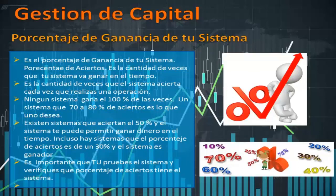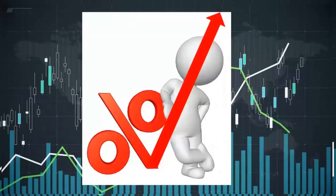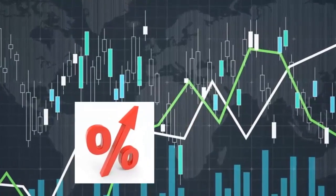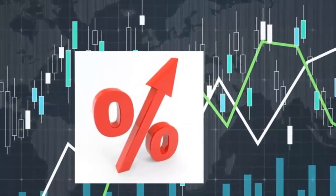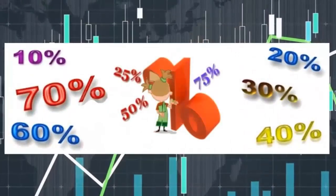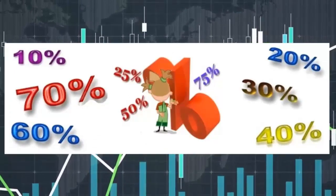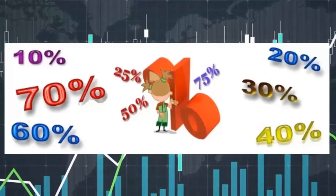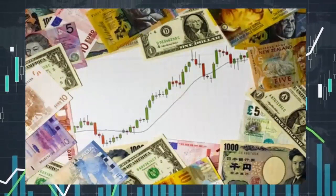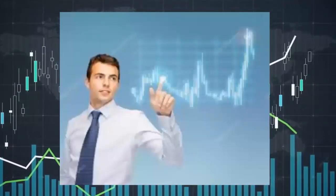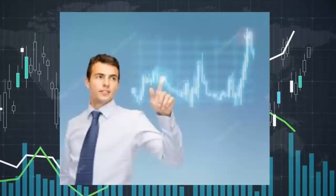Porcentaje de ganancia de tu sistema: es el porcentaje de aciertos, la cantidad de veces que tu sistema va a ganar en el tiempo. Ningún sistema gana el 100% de las veces. Un sistema de 70 a 80% de aciertos es lo que uno realmente desea. Existen sistemas que aciertan el 50% y el sistema puede permitirte ganar dinero en el tiempo. Incluso hay sistemas con porcentaje de aciertos de 30% y el sistema puede ser ganador. Es importante que pruebes el sistema y verifiques qué porcentaje de acierto tiene.